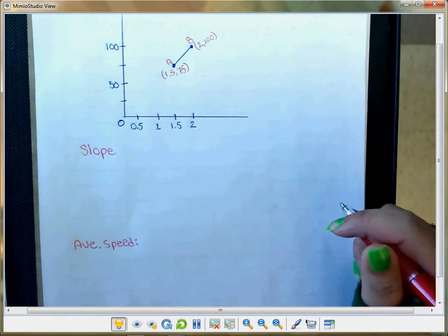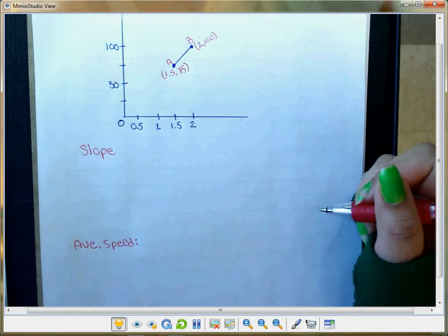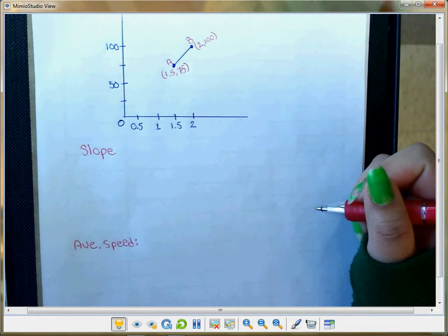The slope between two points on a distance-time graph is the average speed of travel between those points.